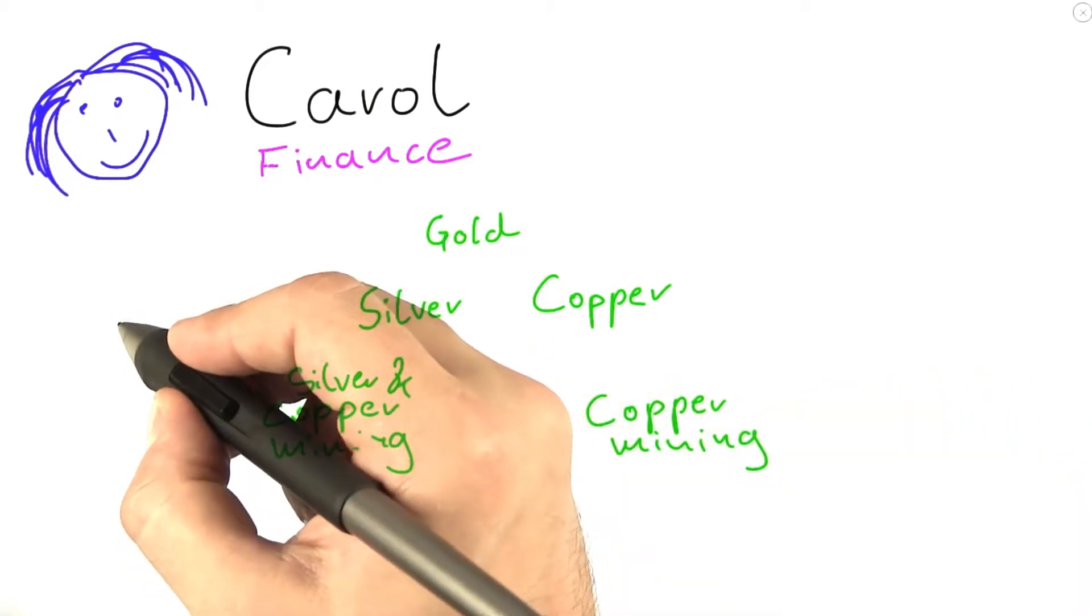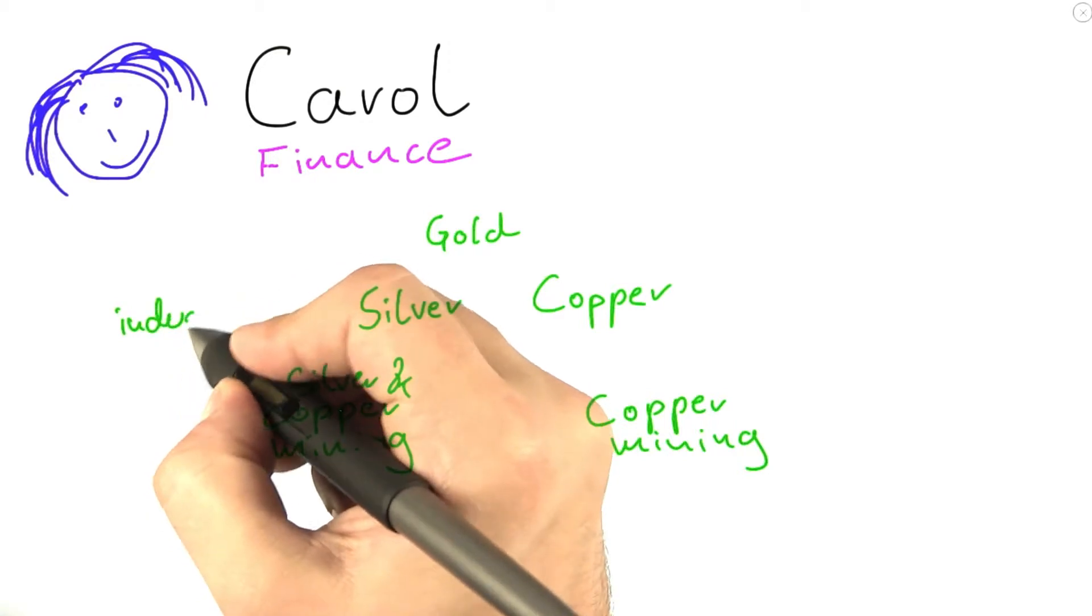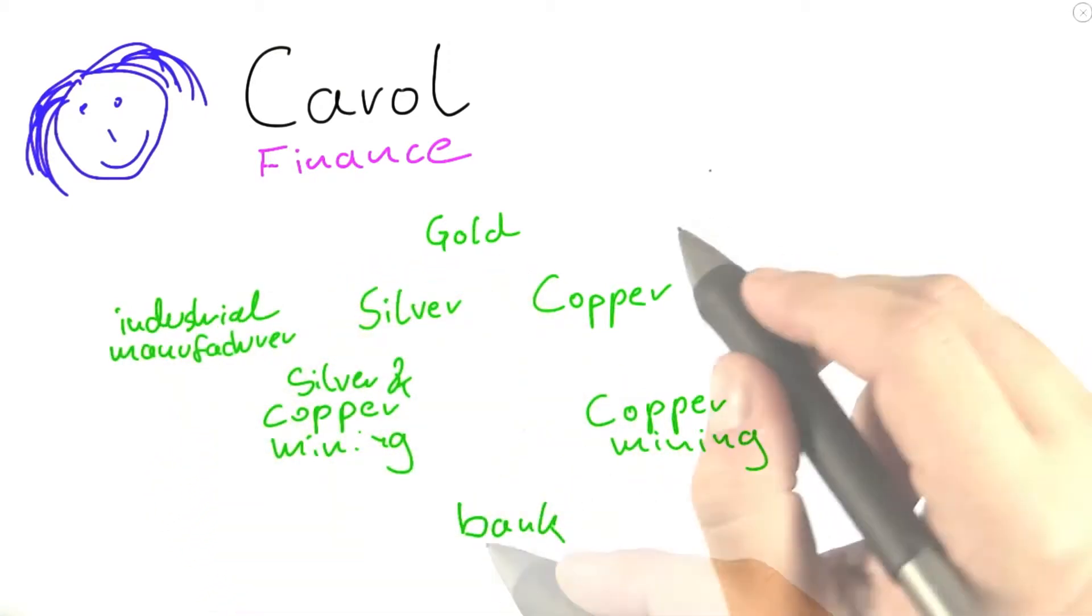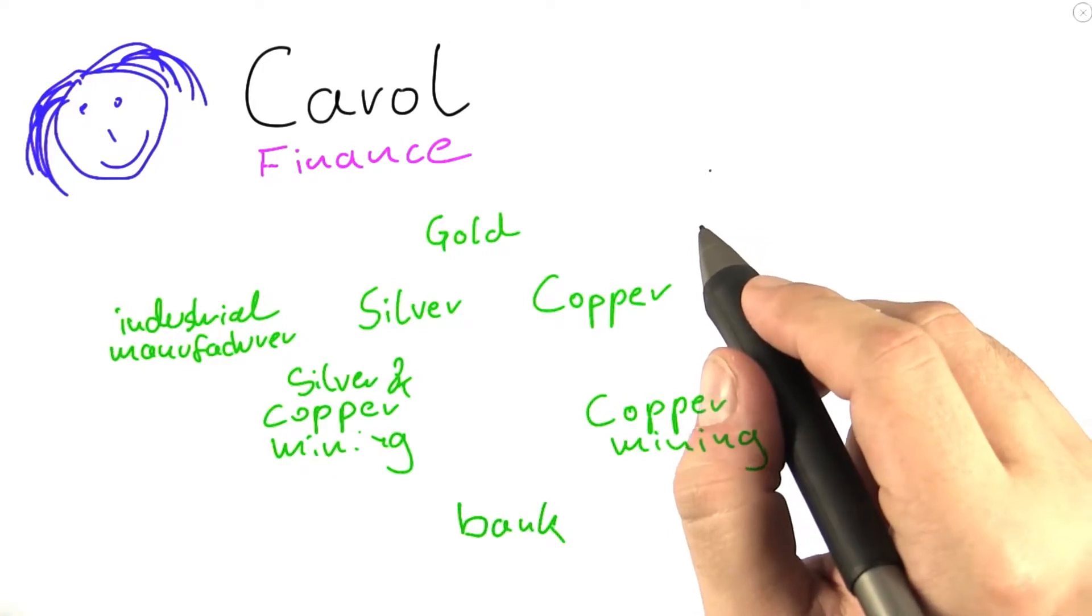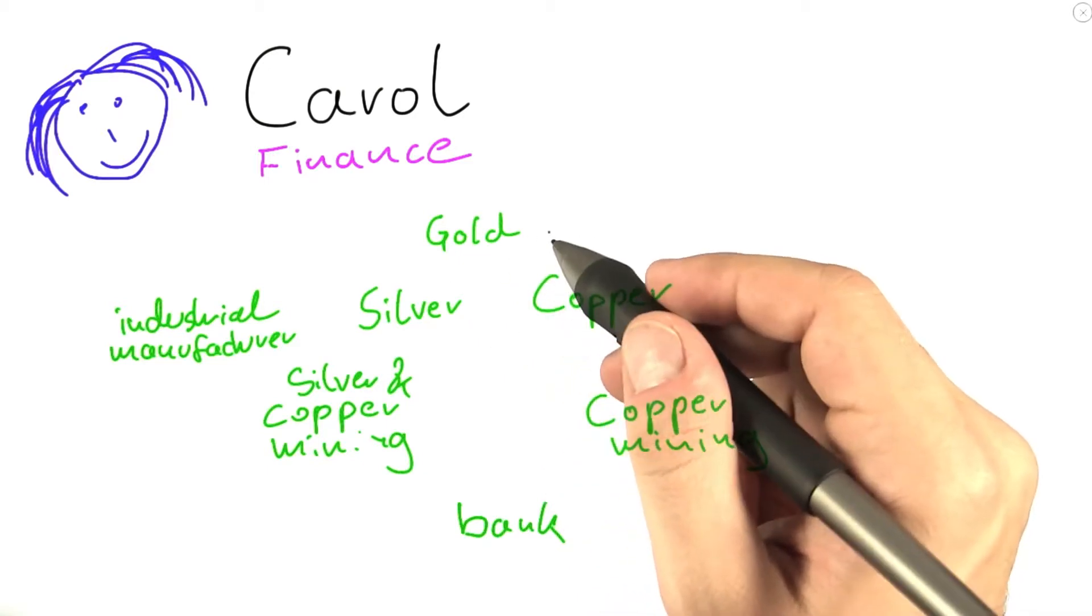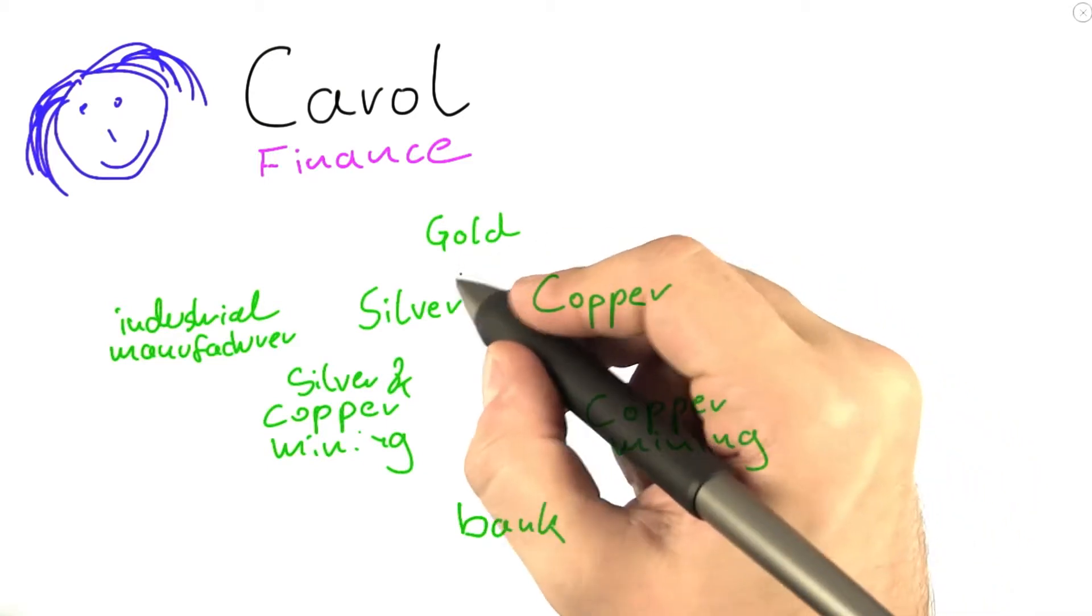Or she could invest in an industrial manufacturer or also in some other bank. So in order for the portfolio to be secure, she wants to spread her risk as much as possible. So she doesn't want to invest in things that are too similar or too closely connected.